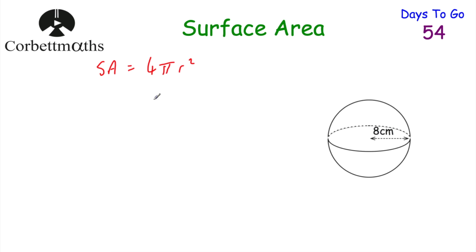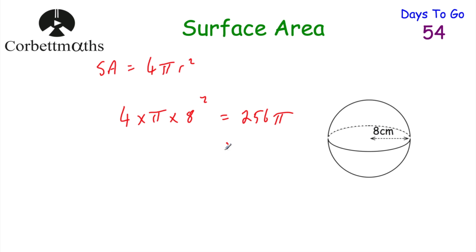If we want to find the surface area of this sphere, we do 4 multiplied by pi multiplied by 8 squared. That gives us 256 pi centimetres squared, or as a decimal, 804.2477 centimetres squared. So the surface area of this sphere is 804.2477 centimetres squared. Well done if you got that.